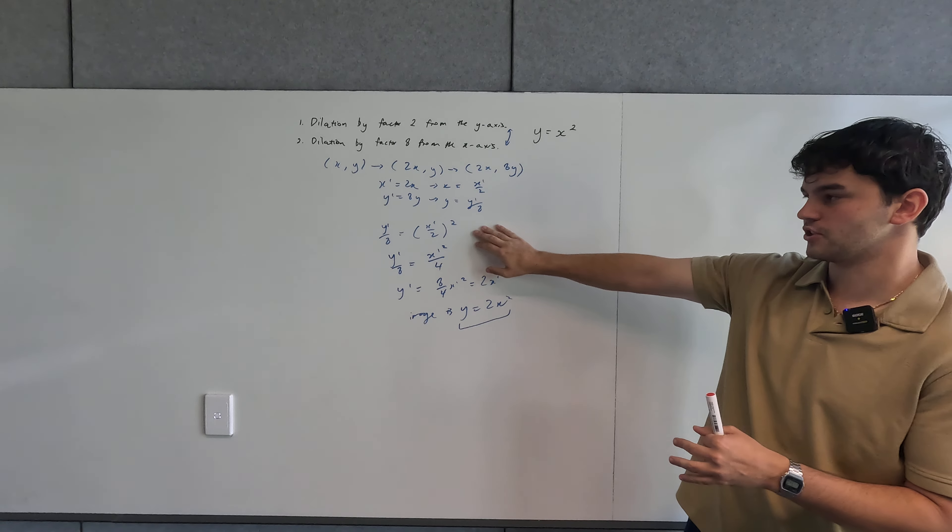For example, if we apply exactly the same process to a square root function, we get a completely different result. Let's try it out quickly. For y = √x, putting in the same expressions gives us y'/8 = √(x'/2), and therefore y' = 8√(x'/2). We can simplify further by rewriting 8 as √64, and then combining under the square root: y' = √(64/2 · x') = √(32x').